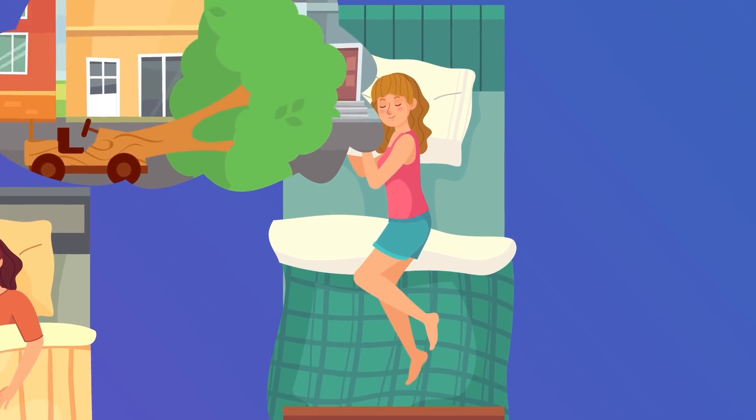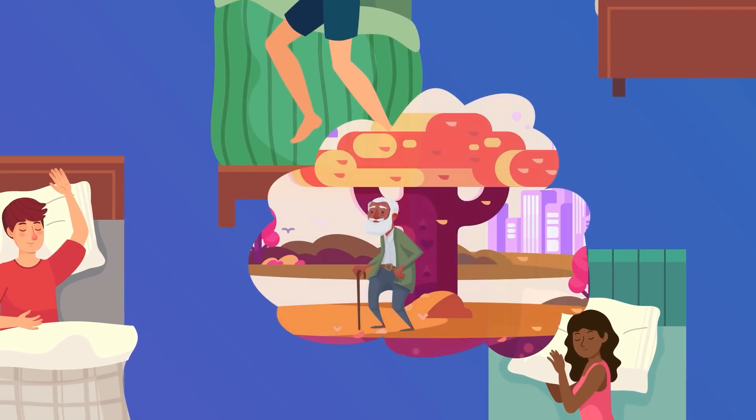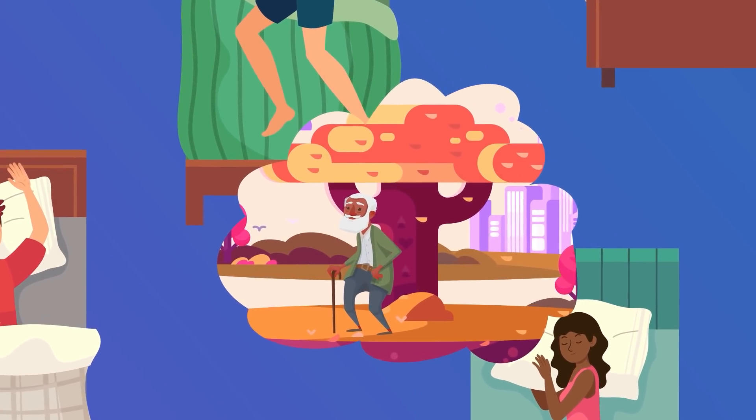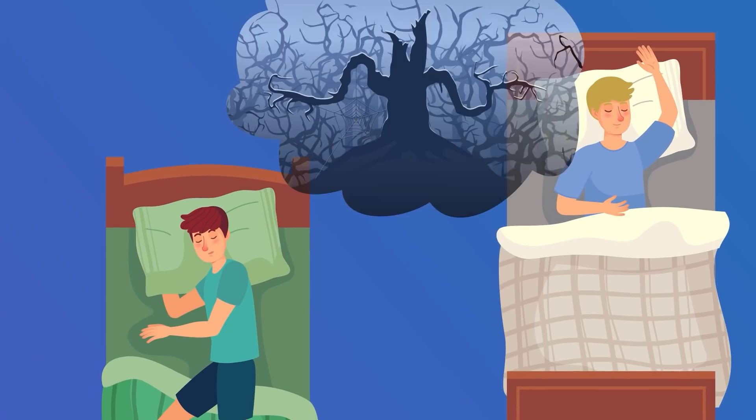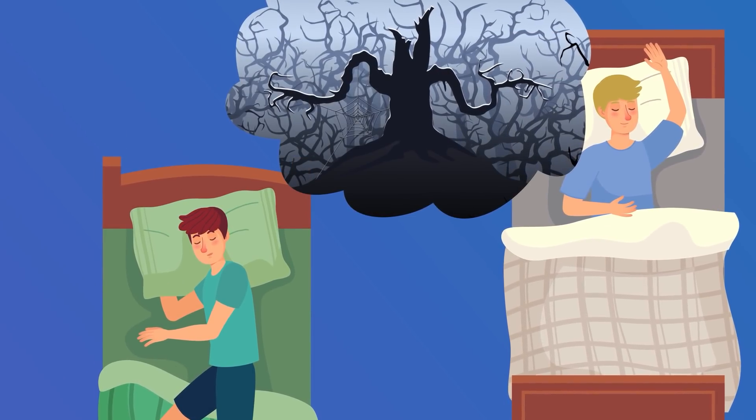Sometimes it was a weird side turn, like a car shaped like a tree, or an old man sitting under a tree. But it seems like Dormio's process is the first proven scientific innovation that can actually influence our dreams.